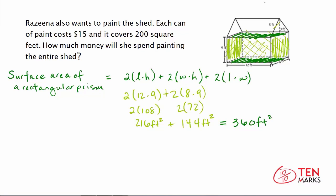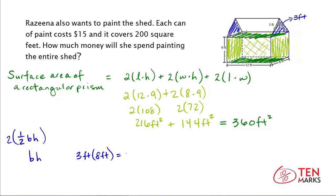Now for the triangular prism on top, it has two triangular bases — one on each end — with a height of 3 feet. The area of one triangular base is 1/2 times the base times the height. Multiplying by 2 for both triangles, 2 times 1/2 cancels to 1, so we just compute base times height: 8 times 3 equals 24 feet squared. This covers the two triangular faces.